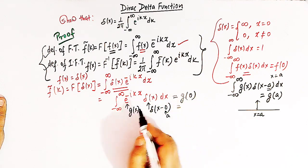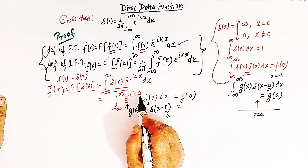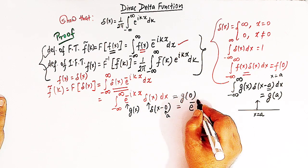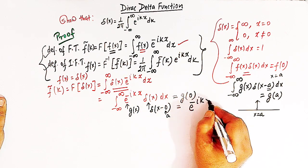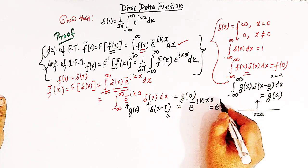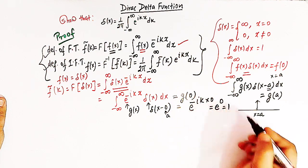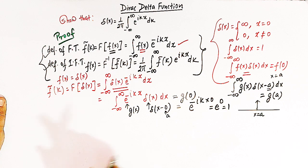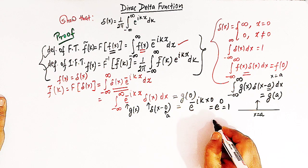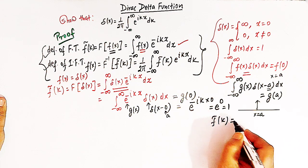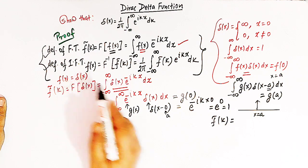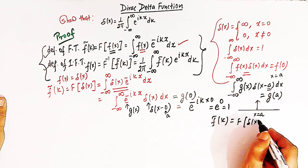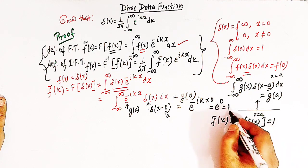The value of this integral is therefore g of 0. g of 0 is obtained by taking x equal to 0, giving e raised to minus ik times 0, which is e raised to 0, equal to 1. So we have obtained the important result that the Fourier transform of the delta function delta of x is equal to 1.